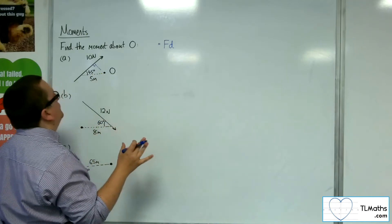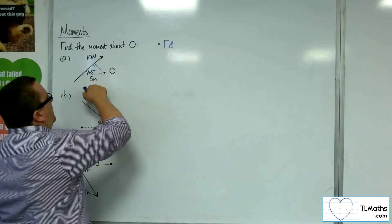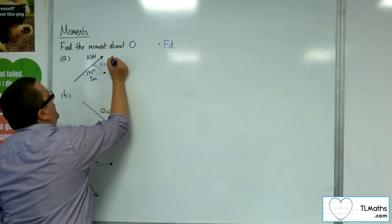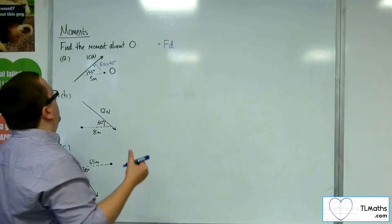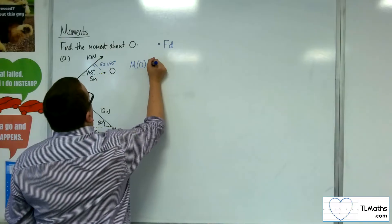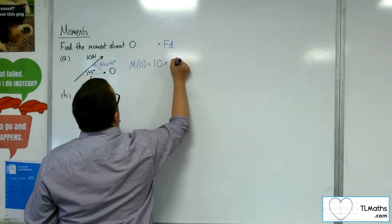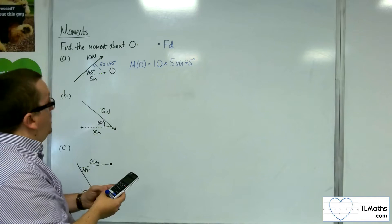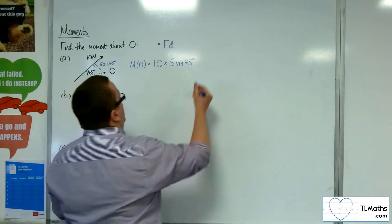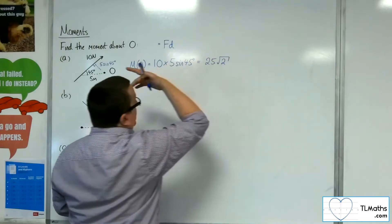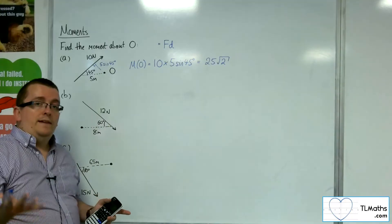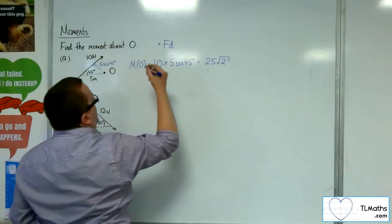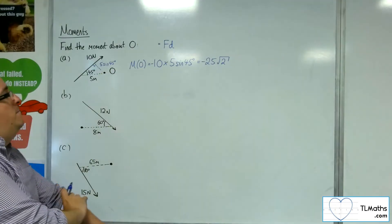For problem A, we've got the opposite side and the hypotenuse, so this would be 5, and opposite uses sine — so 5 sine 45 degrees. The moment about O is equal to the force times the perpendicular distance, 5 sine 45. So 10 times 5 times sine 45 is 25 root 2. Now we also need to consider the sense — because this is going clockwise, it will be negative. So it's actually minus 25 root 2.